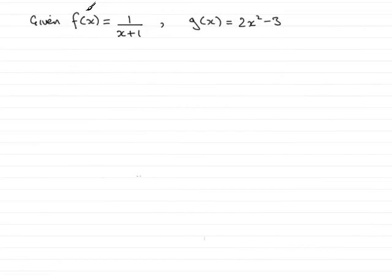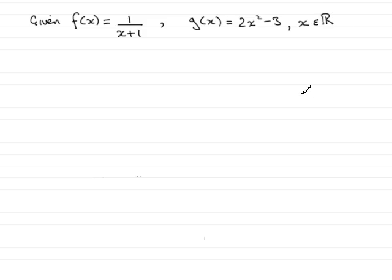In this part of the question, we already know that f of x equals 1 over x plus 1, but we're given a new function: g of x equals 2x squared minus 3. This function is valid for any real number — x is any real number. And we're asked to find the values of x which make fg of x equal 1 eighth.